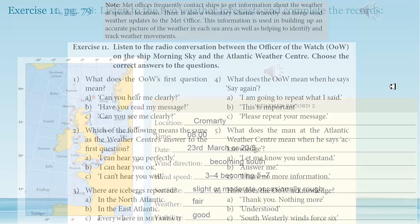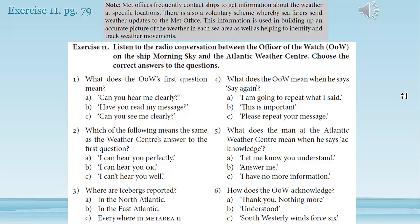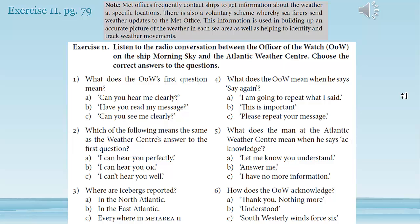Let's go on to the last exercise for today — exercise 11 on page 79. We're going to listen again to a radio conversation between the OOW, the officer of the watch, on the ship Morning Sky, and the Atlantic Weather Center. This is a typical interaction. The Met offices frequently contact ships to get information about the weather at specific locations. It's voluntary — the seafarers send weather updates to the Met Office, and this information is used to build up accurate weather pictures in each sea area and identify and track weather movements.